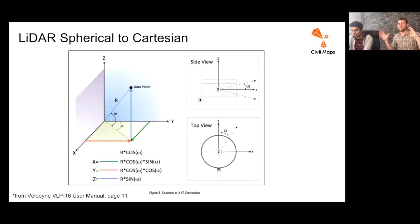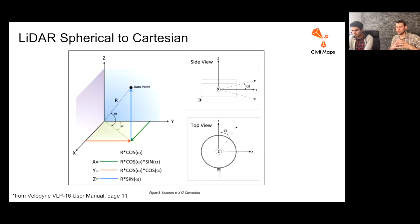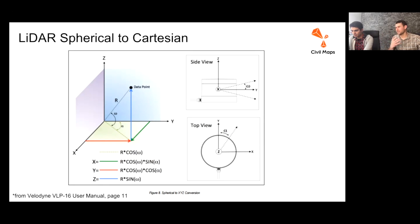Putting it all together: David talked about time of flight to get the distance, and I was referring to the different angles. Because you have those two — the horizontal angle, the vertical angle, and the distance — you can convert those spherical coordinates into Cartesian XYZ coordinates. That's essentially what our drivers are doing: reading the network information from the lidar, reading out these different angles, and doing some simple trigonometry to convert to XYZ.